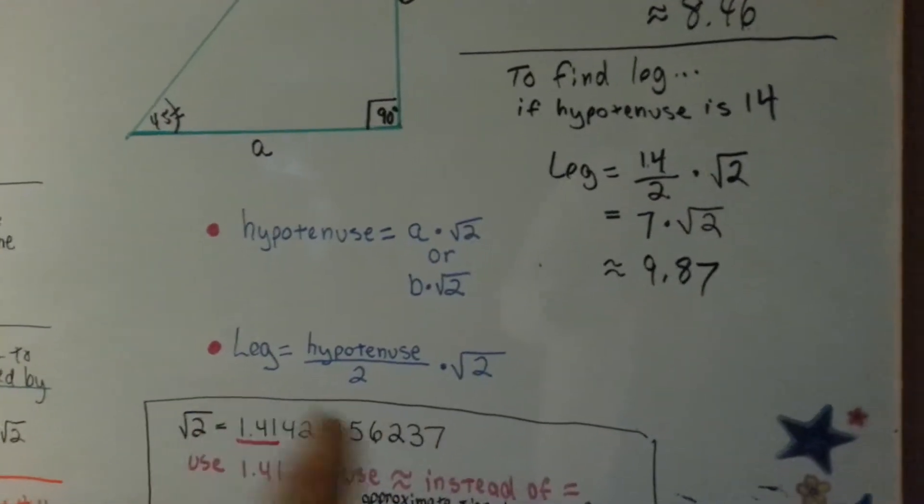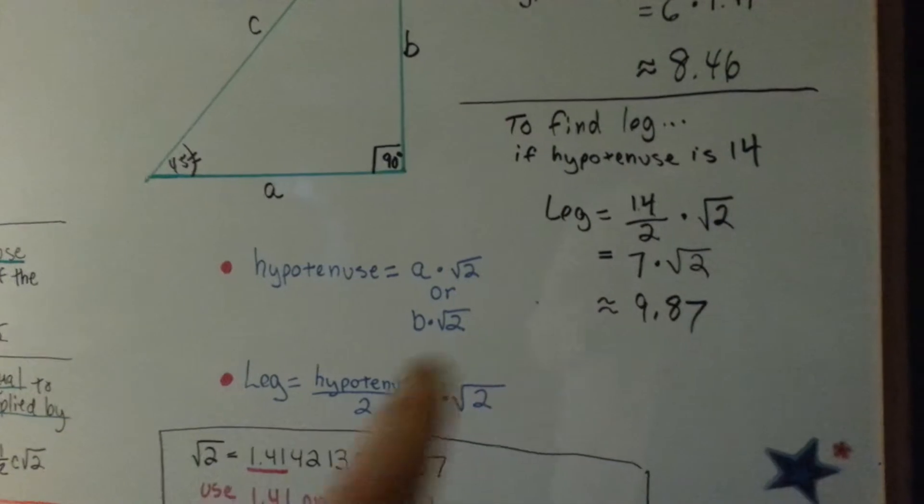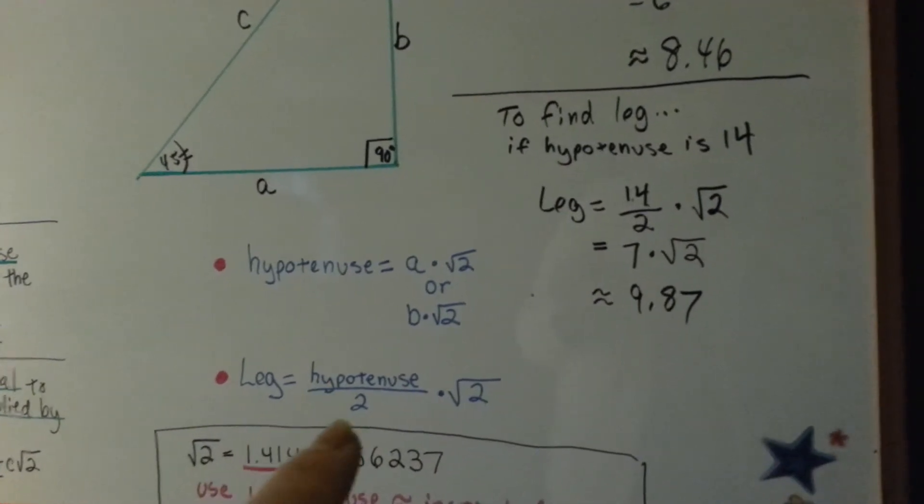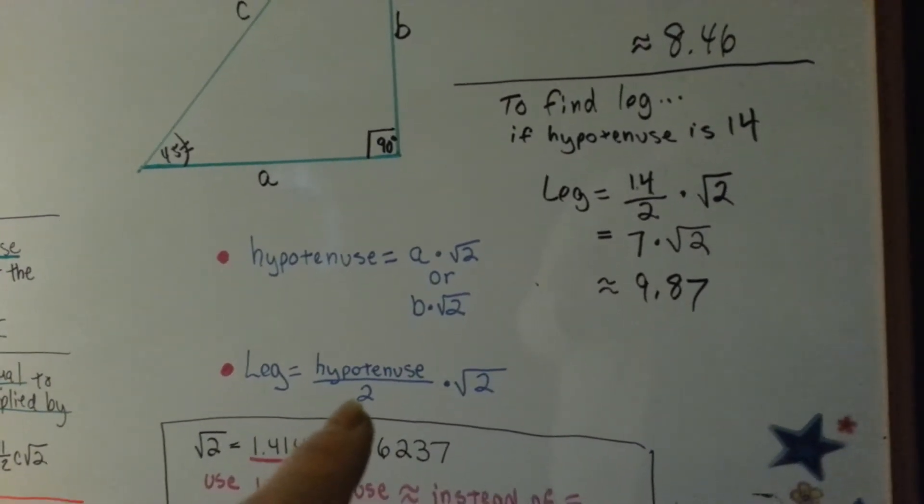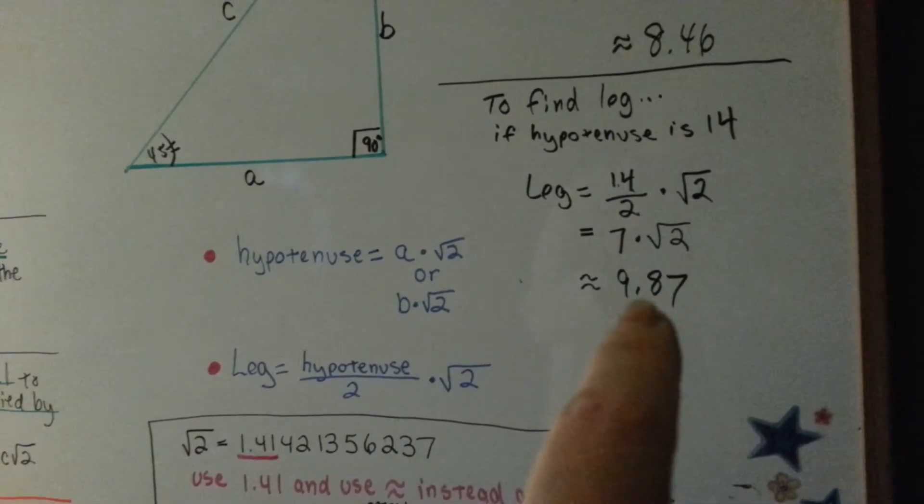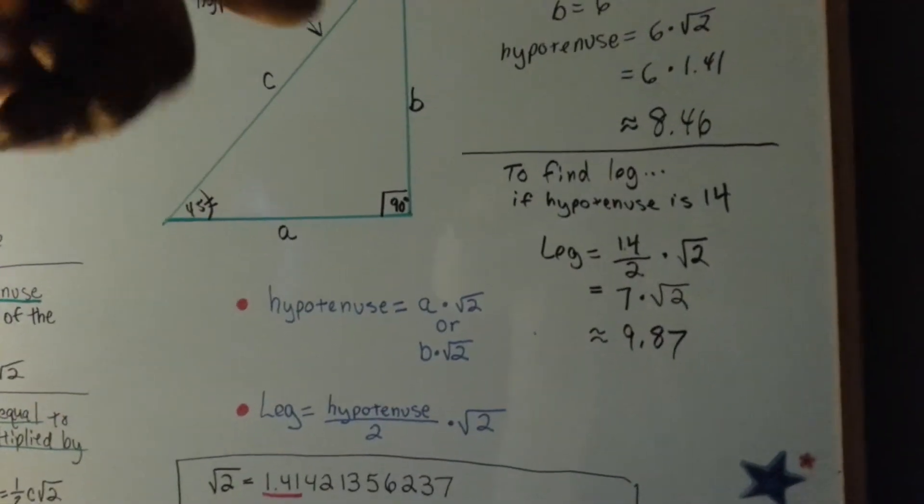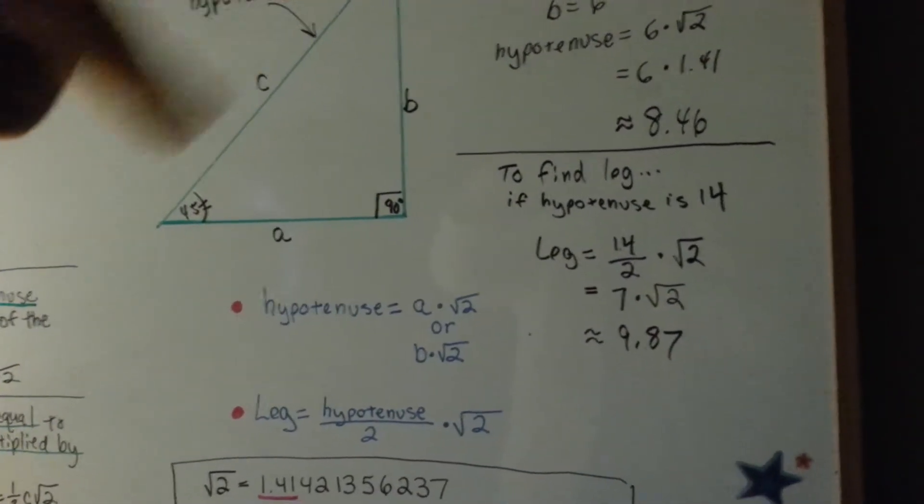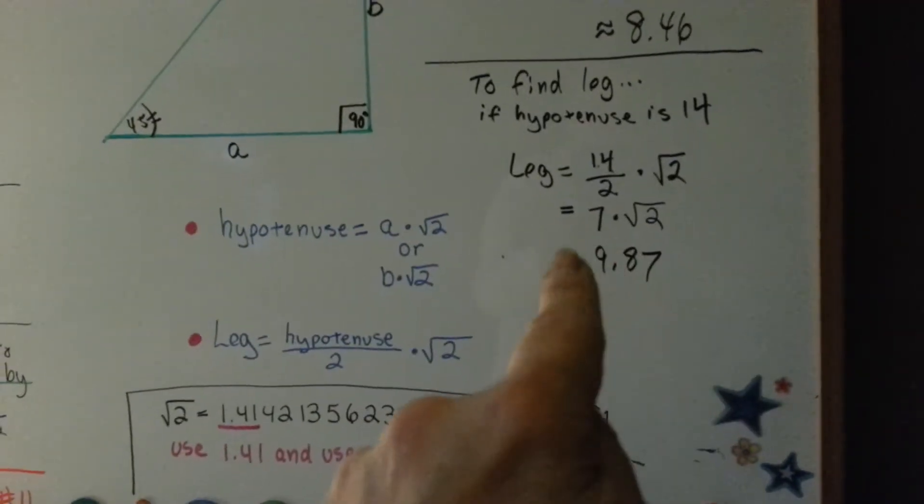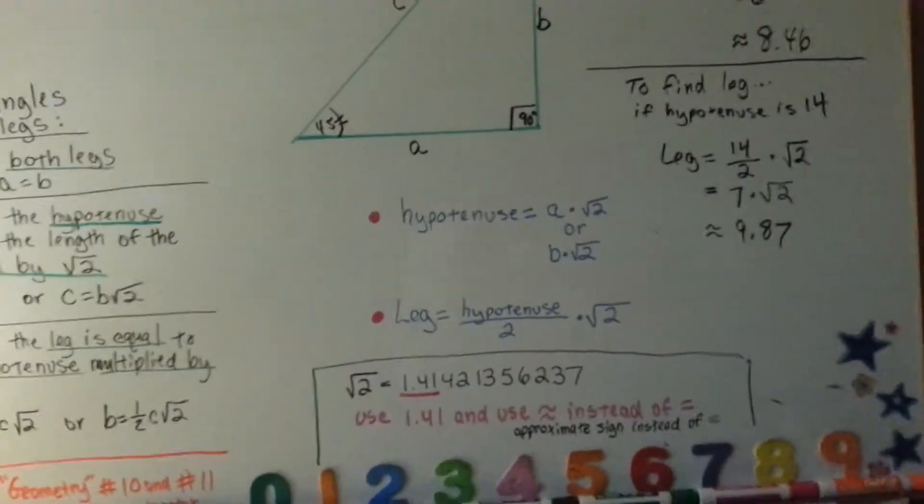Now, to find the leg, what we're going to do is, let's say the hypotenuse is 14. So, if we know it's 14, we can cut that in half right now and say it's 7. See? And then we can multiply that by the square root of 2. And we get 9.87 for one of the legs if the hypotenuse is 14. But it's approximately 9.87. Very important, approximately.